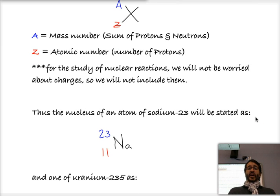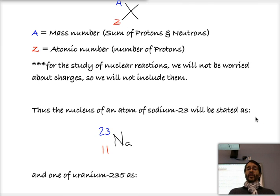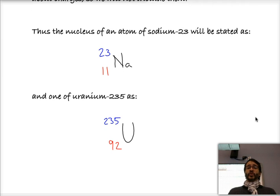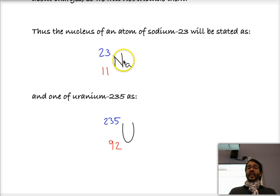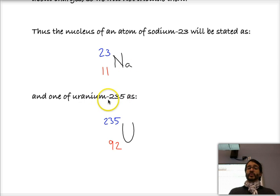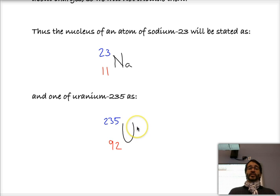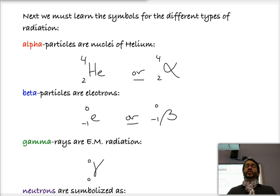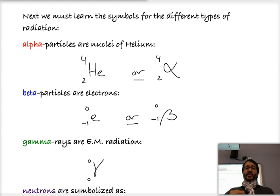So if we wanted to write about the nucleus of an atom of sodium-23, we could go to the periodic table and find that the atomic number of sodium is 11, and we write 23 as the mass number and Na as its symbol. Similarly, we would do the same for an atom of uranium-235: 235 in the mass number position, 92 from the periodic table for uranium, and of course its symbol. Once we know how to write our symbols, we also need to learn what are the symbols for the different types of radiation that is being emitted.